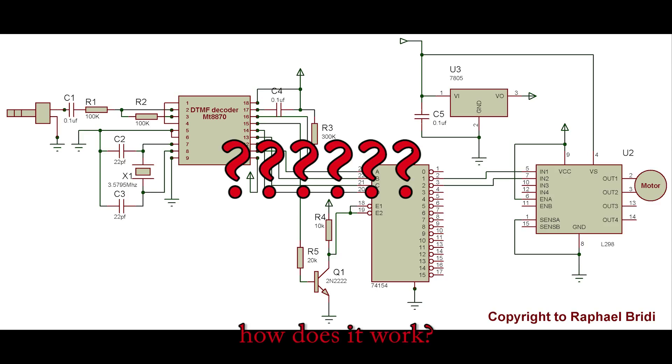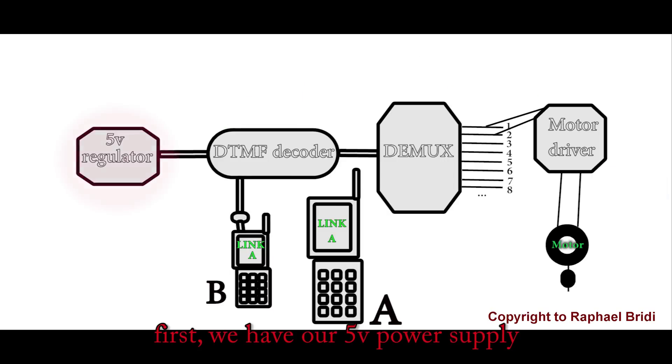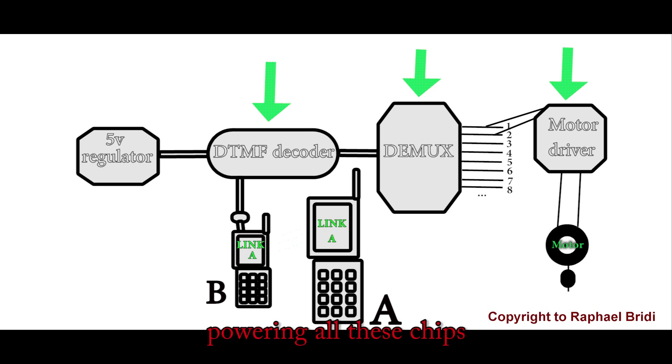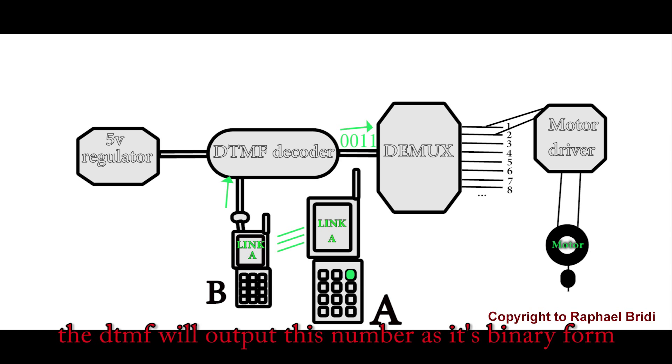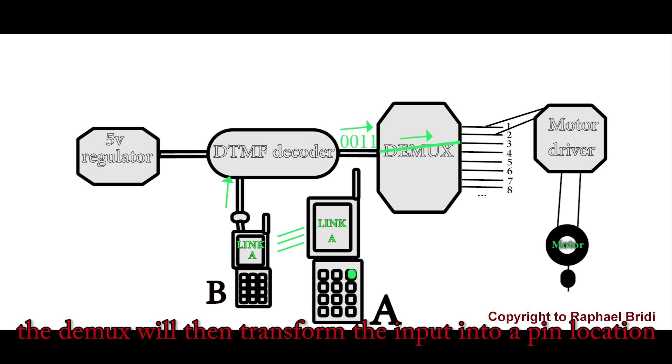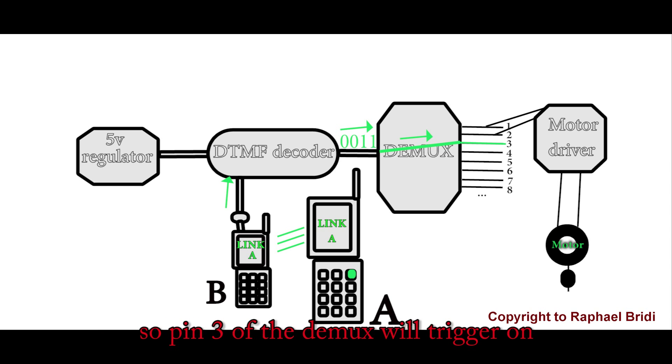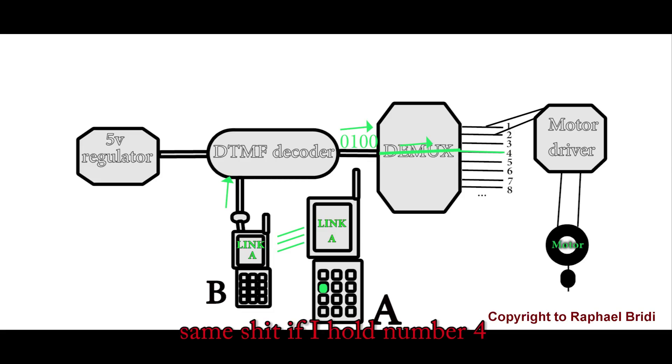So how does it work? First we have our 5V power supply powering all these chips. If I call cell phone B and hold number 3, the DTMF will output this number in its binary form. The DMUX will then transform the input into a pin location. So pin 3 of the DMUX will trigger on. Same thing if I hold number 4 or number 5.